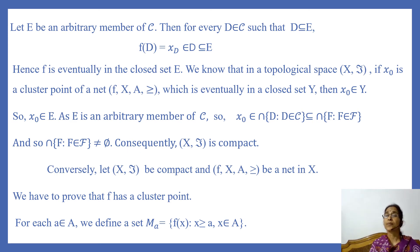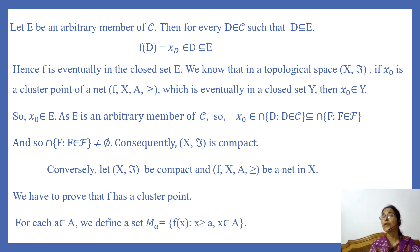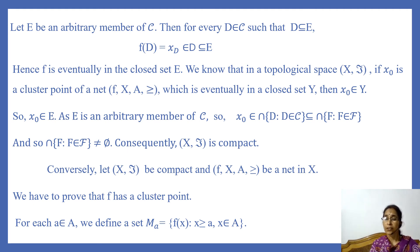Since E is an arbitrary member of C, x₀ belongs to the intersection of all D in C, and this intersection is contained in the intersection of all members of F. Therefore the intersection of all members of F is non-empty. Consequently (X, T) is compact, since we have shown that every collection of closed sets with the finite intersection property has non-empty intersection.